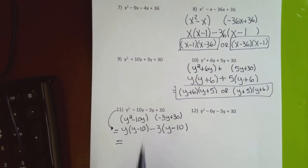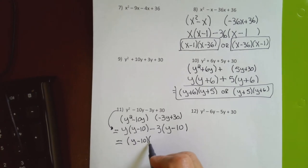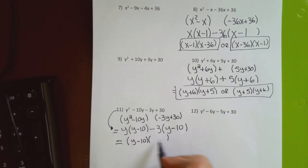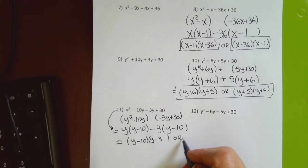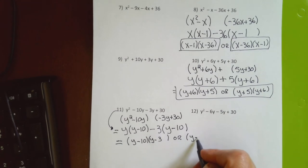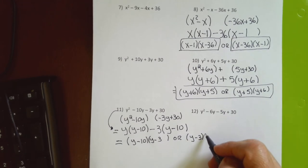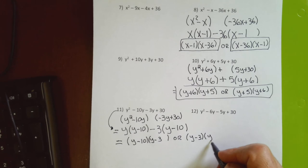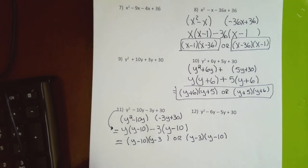For the answer I can write the common parenthesis first and then what's in front of it in their own parenthesis, or write what's in front of the common parenthesis followed by the common parenthesis. I'll try to be more consistent with equal signs going forward.